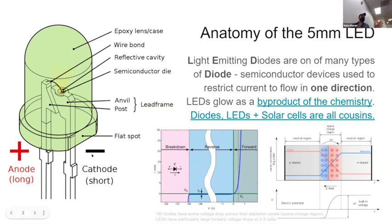LEDs are a weird thing. Diodes are just one-directional — they let electricity flow in only one direction. An LED is just one of those that happens to also glow at the same time, which is a neat thing. At first it was a discovery by accident, but then they realized it's not just some quirk of a germanium crystal — if you tune it right, you can get a lot of glowing light for a relatively low energy cost.